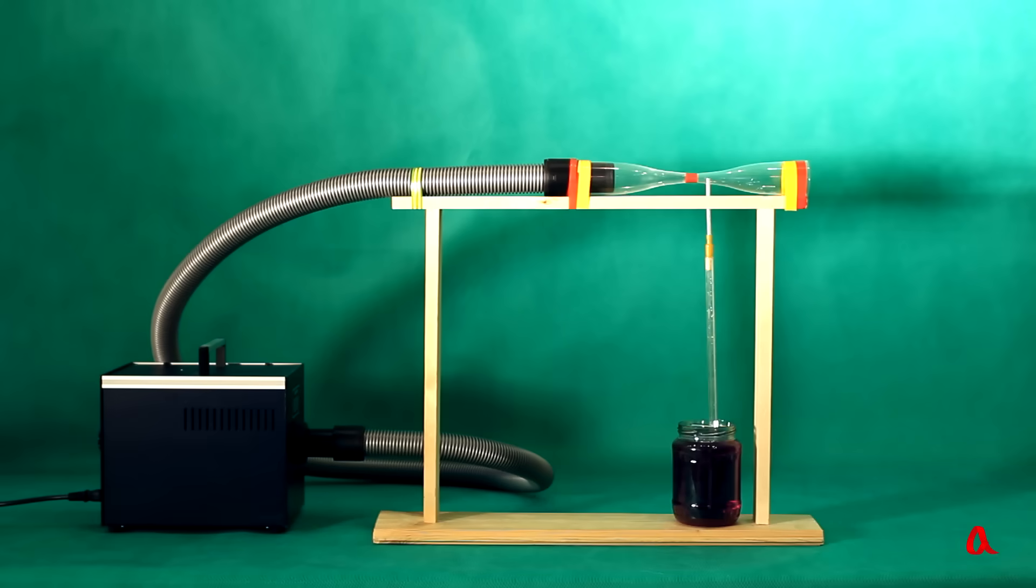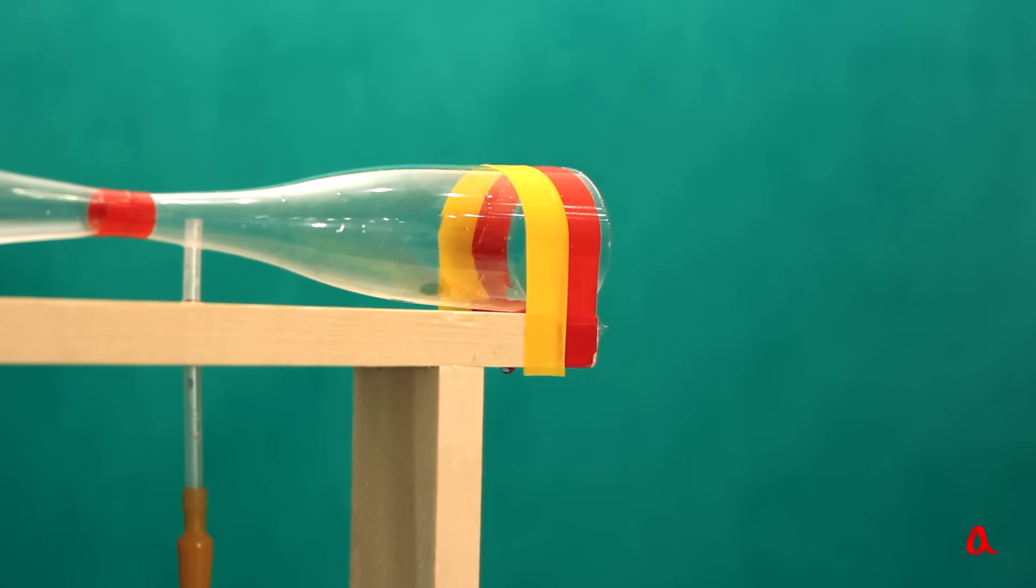To increase the pressure even greater, we'll connect the pipe to the blower, which provides a far higher speed of the airflow. We switch on the blower and what we get is a perfect water sprayer.